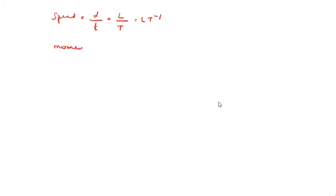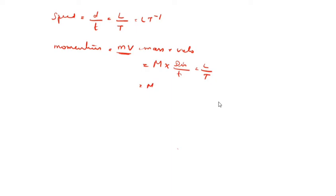After that, momentum. What is momentum? Momentum is equal to MV, mass into velocity. Mass is M. Velocity is displacement by time, or L by T. So M into L by T equals MLT⁻¹. This is called momentum.